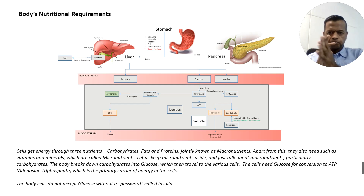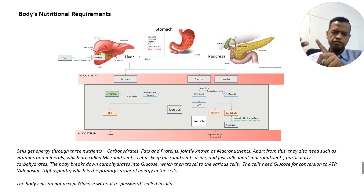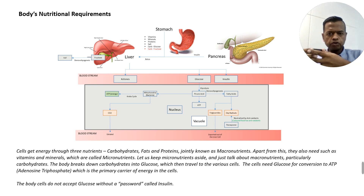So here we go. As we all know, human cells require energy to function, and this energy is derived primarily from three macronutrients: carbohydrates, fats, and proteins — jointly known as macronutrients. Apart from this, the body also needs several micronutrients such as minerals and vitamins, but I'm not covering those in this video.